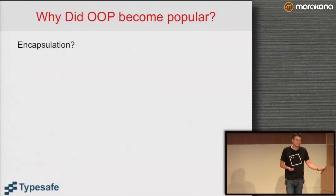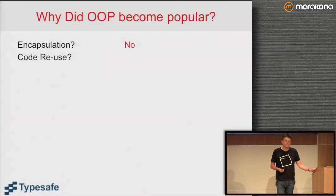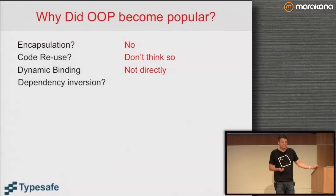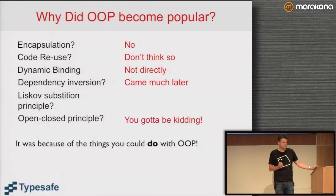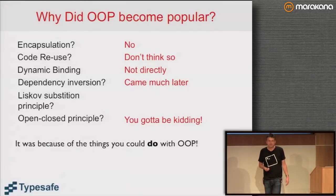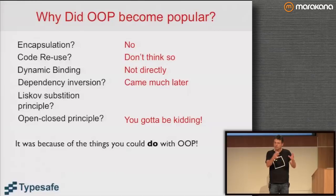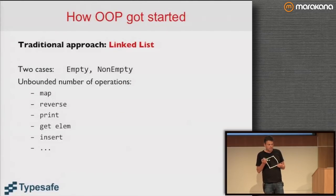Why did object-oriented programming become popular? To answer that, it would be good to see what Simula 67 and Smalltalk have in common. Was it because of encapsulation? No. Code reuse? No. Dynamic binding? Probably closer but not directly. Dependency inversion? That came much later. Liskov substitution principle? Open-close principle? I believe it was because of the new things you could do with OOP. To get initial adoption, you need to fulfill a need that the incumbent cannot fulfill.